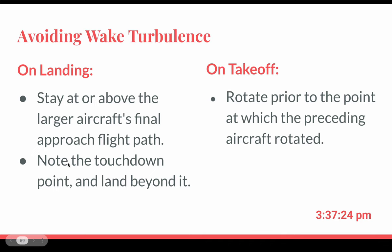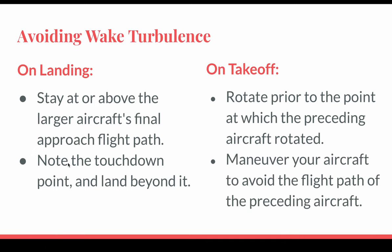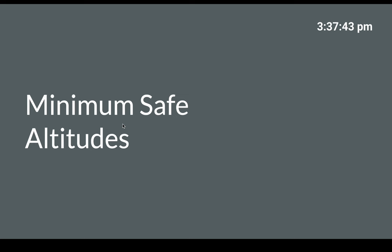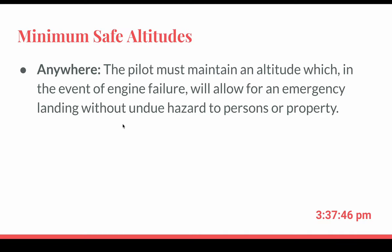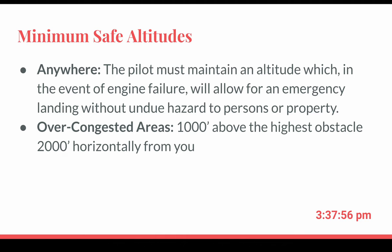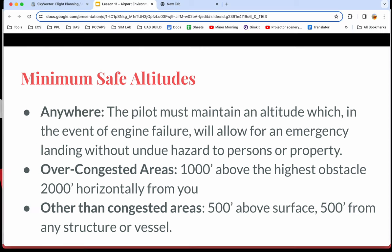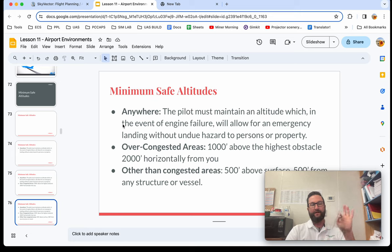If you're taking off, rotate prior to the point at which the preceding aircraft rotated, then maneuver to avoid the flight path of the preceding aircraft. Smaller planes take less runway and should climb up above the wake and sidestep if needed. We also have minimum safe altitudes: anywhere you are, the pilot must maintain an altitude that allows for an emergency landing without undue hazard. Over congested areas, that's 1,000 feet above the highest obstacle; other than congested areas, 500 feet above the surface and 500 feet from any structure or vessel.